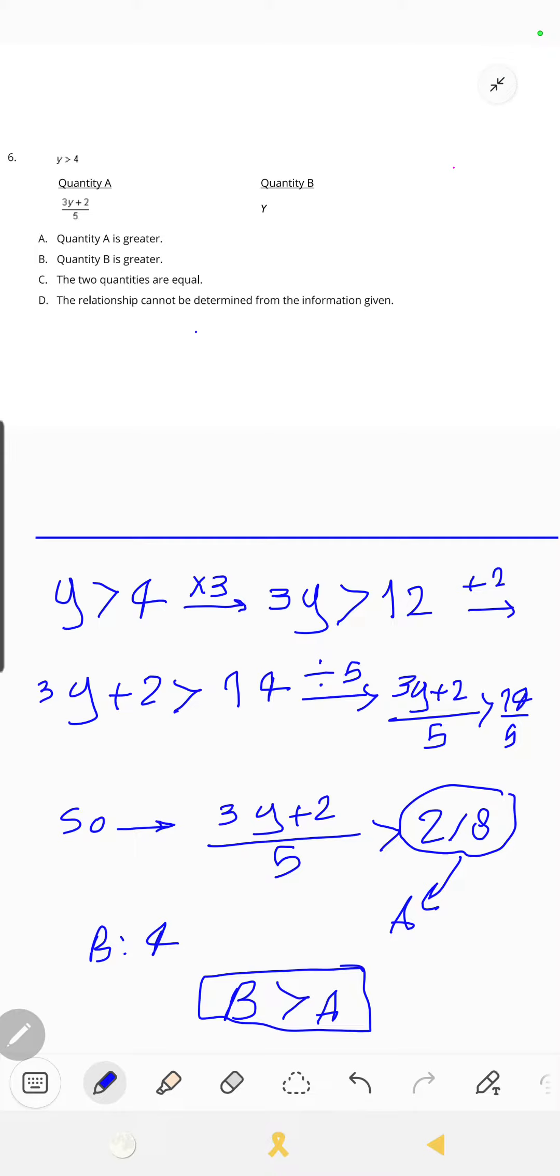To solve this problem we have two ways. First, the normal way: y is greater than 4, so we multiply both sides by 3, giving 3y > 12. Add 2 to both sides: 3y+2 > 14. Finally, divide both sides by 5.